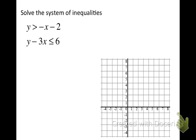Now I'm going to ask you to graph a system of inequalities, and I'll go through one with you. Looking at the first inequality, y is greater than -x minus 2. First, is it going to be a dashed or solid line? Since it is greater than, it's going to be a dashed line. And since it's eating the y, I am going to shade above.